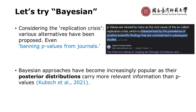The major reason we moved to Bayesian is the replication crisis. P-values are viewed by many as a root cause of the so-called replication crisis, characterized by a prevalence of positive scientific findings that differ from previous studies — like findings where male is better than female in one study but different in another. Some people even say we need to ban p-value from journals. The Bayesian approach has become increasingly popular because posterior distributions carry more relevant information than p-values.